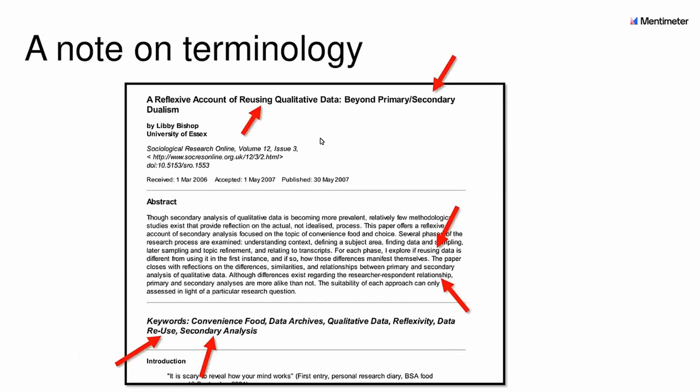Before we get too far along, I want to address one simple point: what is secondary analysis? In short, secondary analysis is a method which asks new questions of old data — it's analyzing data that you've not collected yourself. There is a nuance around terminology, and you may have heard terms like secondary data analysis or reuse projects. They all refer to the same method.